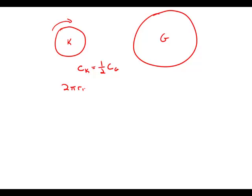So 2πR of K equals one-half of 2πR of G. And if we divide by 2π, what we get is that R of K — the radius of K — has to be half the radius of G. So any information that allows us to figure out the radius of either one of them would allow us to figure out the other radius.